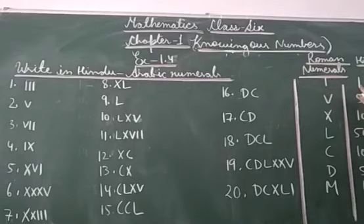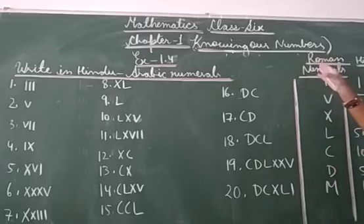I is 1, V is 5, X is 10, L is 50, C is 100, D is 500, and M is 1000. These numbers are in Roman numerals.